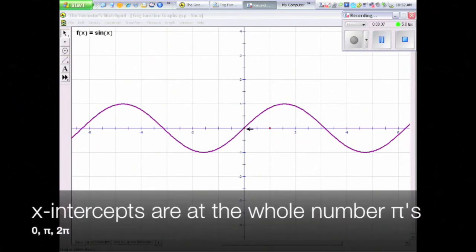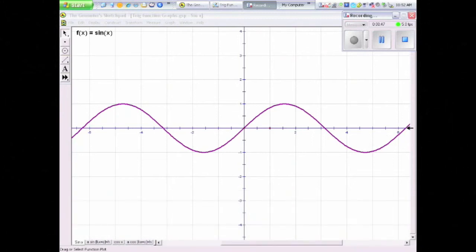We also remember that the x-intercepts are at the whole pi. We have 0π, you have 1π, you can see here that's 3.14, and of course you have 2π at 6.28. And of course it goes backwards as well. Sine is an odd function, so you can see as it goes back across the y-axis it continues that pattern.